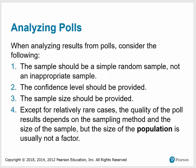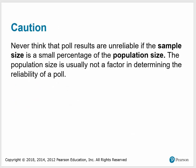When analyzing results from polls, consider the following: the sample should be a simple random sample, not an inappropriate sample; the confidence level should be provided; and the sample size should be provided. Except for relatively rare cases, the quality of poll results depends on the sampling method and the size of the sample, but the size of the population is not usually a factor. Never think that poll results are unreliable if the sample size is a small percentage of the population size — the population size is usually not a factor in determining the reliability of a poll.